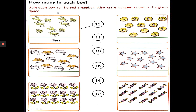Now students, let us take up one page of the primary maths book. You can see the question: how many in each box? That is, you have to count the number of items given in each box and then match it with the correct number. Join each box to the right number, and also write the number name in the given space. The first one — you can see there are frogs. How many frogs? 1, 2, 3, 4, 5, 6, 7, 8, 9, 10. So there are 10 frogs, matched with 10, and the number name will be T-E-N.